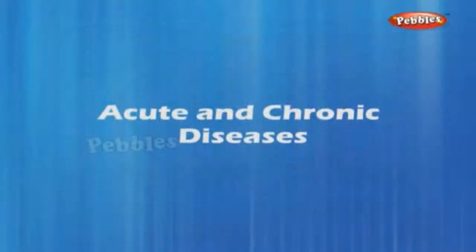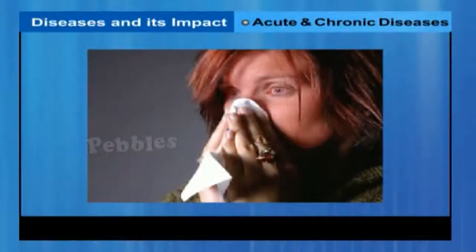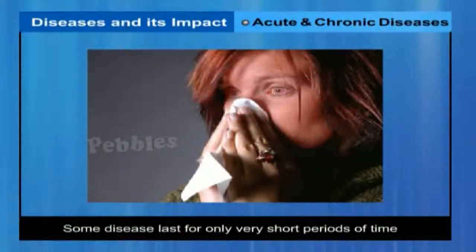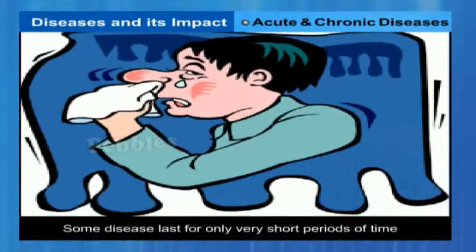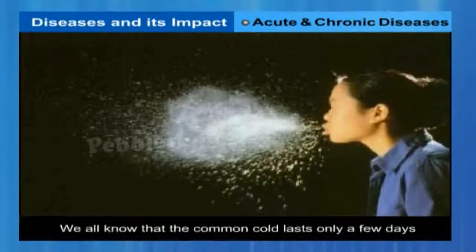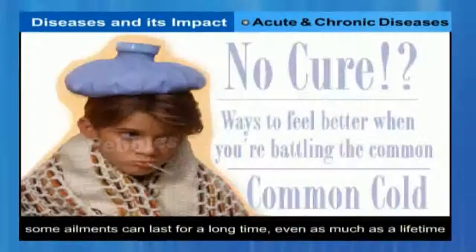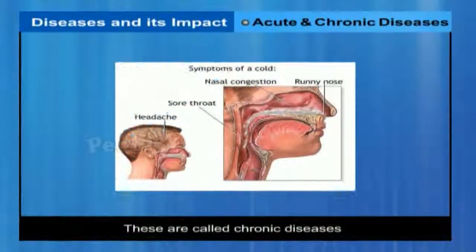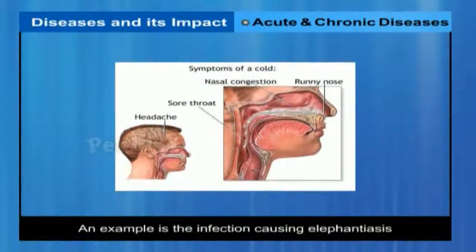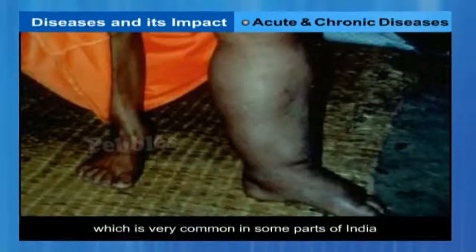Acute and chronic diseases. Some diseases last for only very short periods of time, and these are called acute diseases. We all know from experience that the common cold lasts only for a few days. Other ailments can last for a long time, even as much as a lifetime, and are called chronic diseases. An example is the infection causing elephantiasis, which is very common in some parts of India.